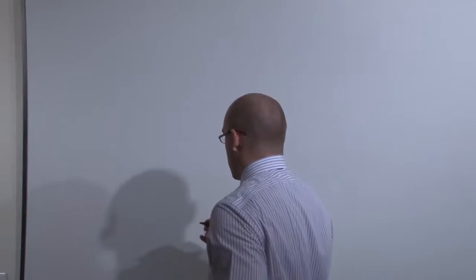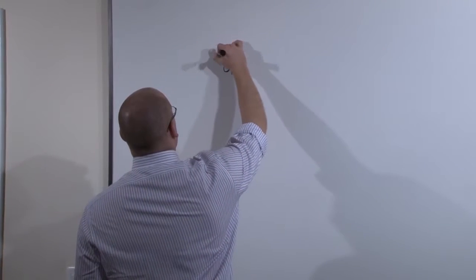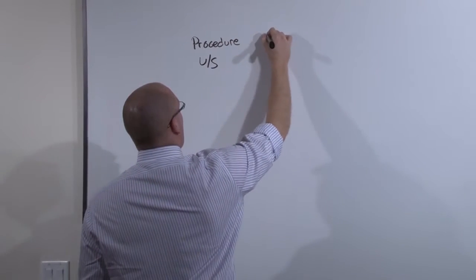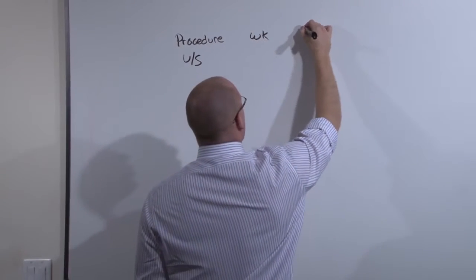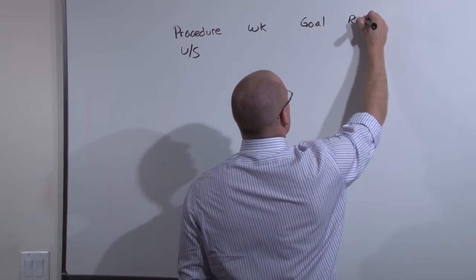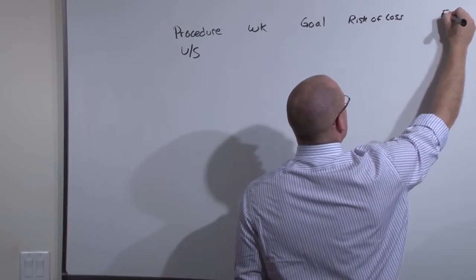Let's build a table where we're going to go through each of the five different testing modalities and their different uses. We're going to start with the one that's done safely in every pregnancy, the ultrasound. We're going to talk about the procedure itself, at what week it can be used, the goal of performing the test, the risk of loss, and then any extra content you need to know about it.